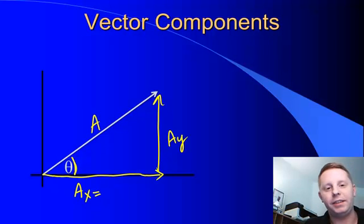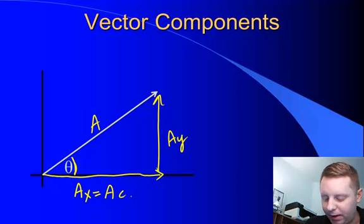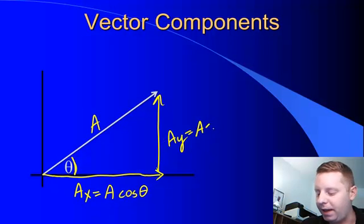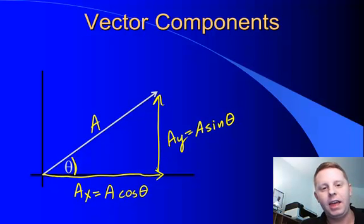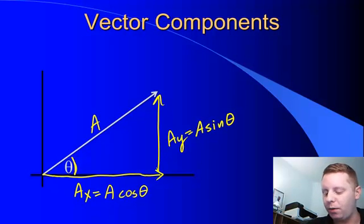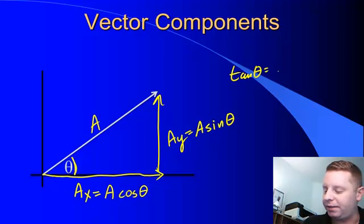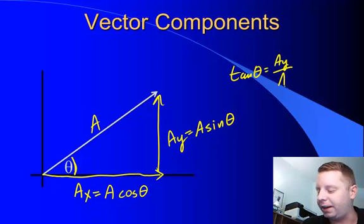This is our x component of vector A. This is our y component of vector A. And we can use basic trigonometry to figure out exactly how big those component vectors are. Ax, because it's the adjacent side, is going to be equal to the magnitude of vector A times the cosine of angle theta. The y component of our vector Ay is going to be equal to A. And because now we're talking about the side of the right triangle that is opposite angle theta, that's going to be A sine theta. And you could actually go in the other direction too. If you happen to know Ay and Ax, or A, any two of those three sides, you could always go and find that angle using trig too. For example, if we knew the vector components Ax and Ay and wanted to find theta, we know that the tangent of theta is the opposite side, Ay, over the adjacent side, Ax. Therefore, angle theta would be the inverse tangent of Ay over Ax.